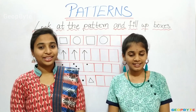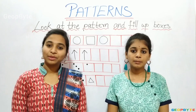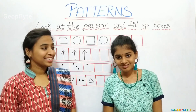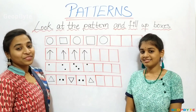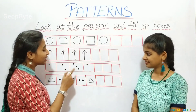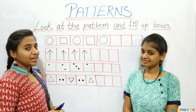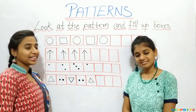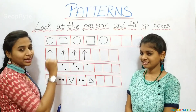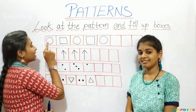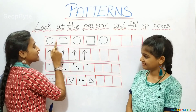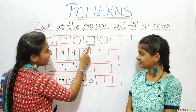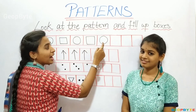Look at the pattern and fill up the boxes. Hey kids, see here. We have a few patterns. Let us see one by one. First, let us go with this pattern. I have a circle, square, circle, square, circle, and boxes.